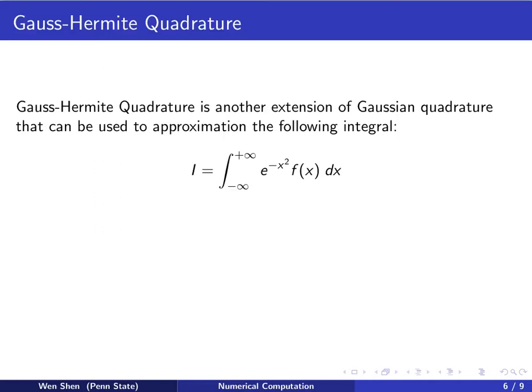We now consider another of such quadrature rule very much in the similar setting. This is called Gauss-Hermite quadrature. This one can be used to approximate the integration of this form where you're integrating from negative infinity to positive infinity of a function f(x) multiplied by e to the negative x squared. You may consider this as a weight function.